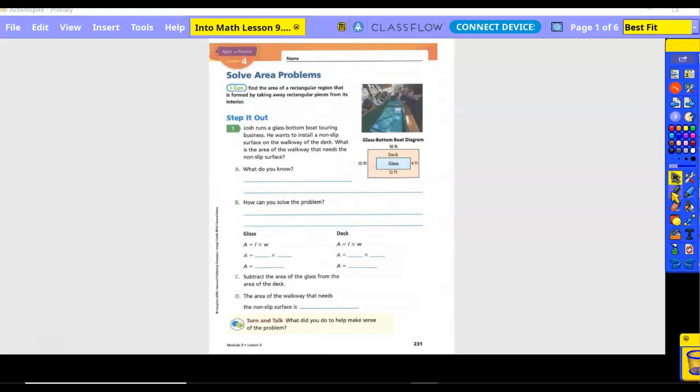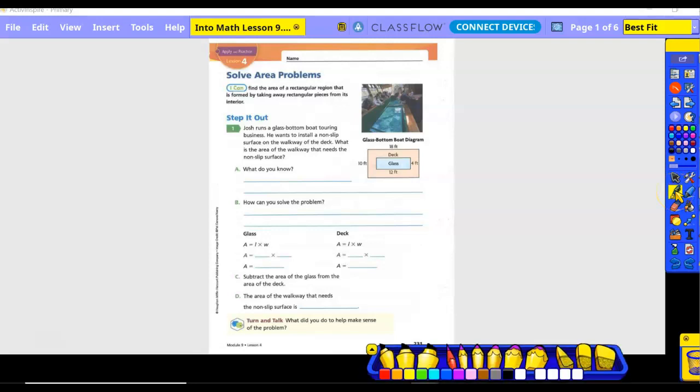So we need to pull out our information. Do we have anything in our word problem part? No. Our information is all in the pictures. So the jet has a length of 18 and width equals 10. The glass has a length of 12 and a width of 4.